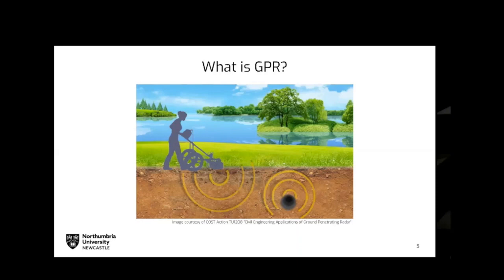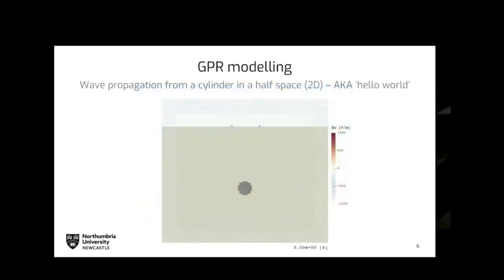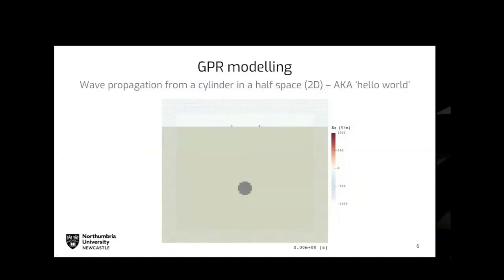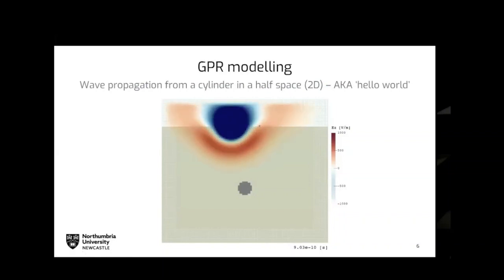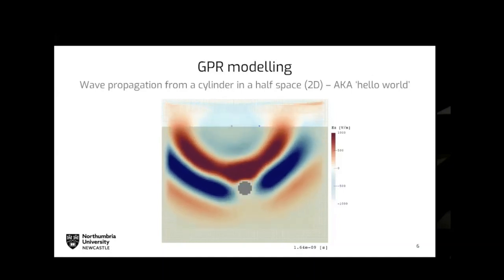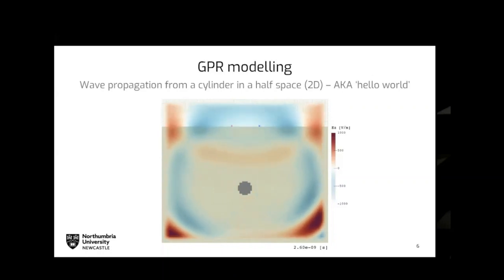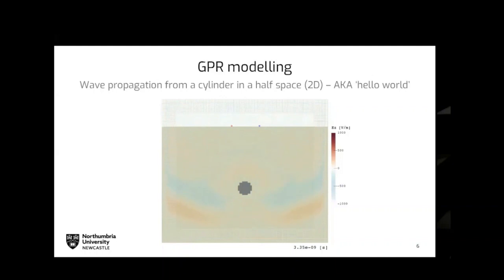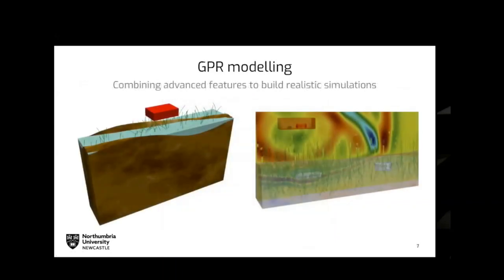That's basically what we're trying to simulate with GPR Max. The most simplistic model we start with — the hello world of GPR modelling — is a simple 2D half-space problem with a buried cylindrical object. We're transmitting a pulse from our GPR on the surface, which gets reflected back from the cylinder and detected by a receiver on the surface. From there, we can build up much more complicated and realistic simulations using the advanced tools we have.